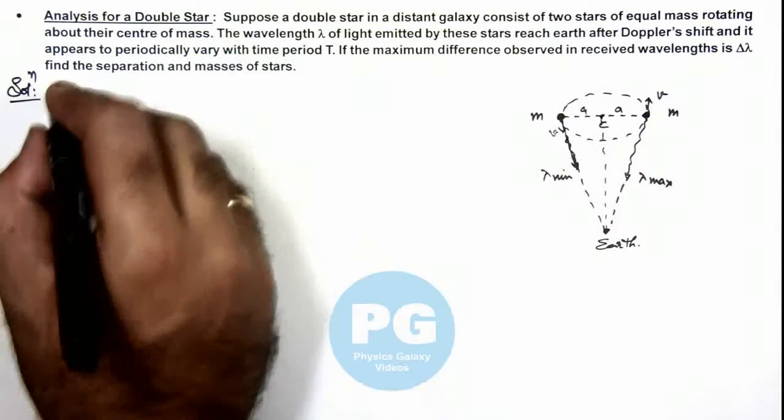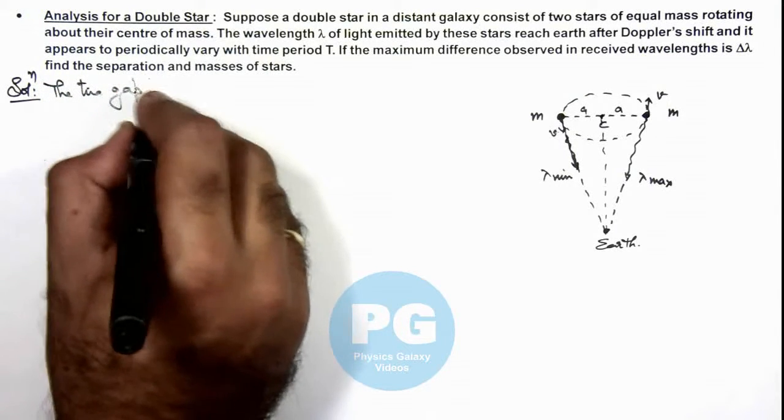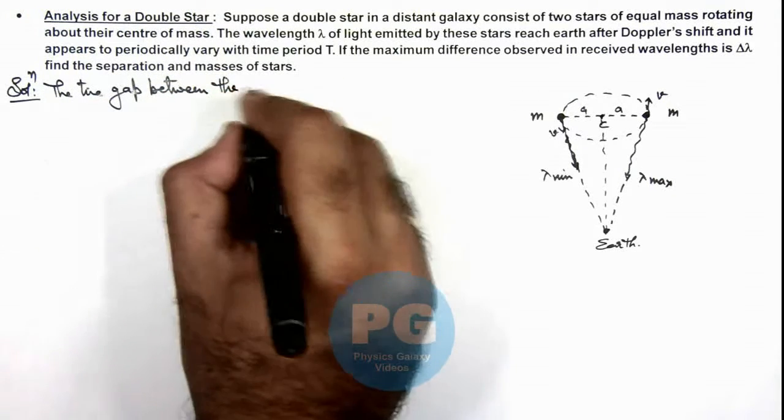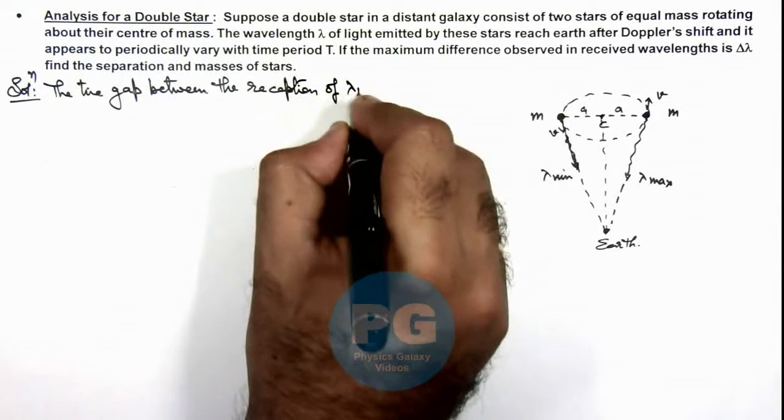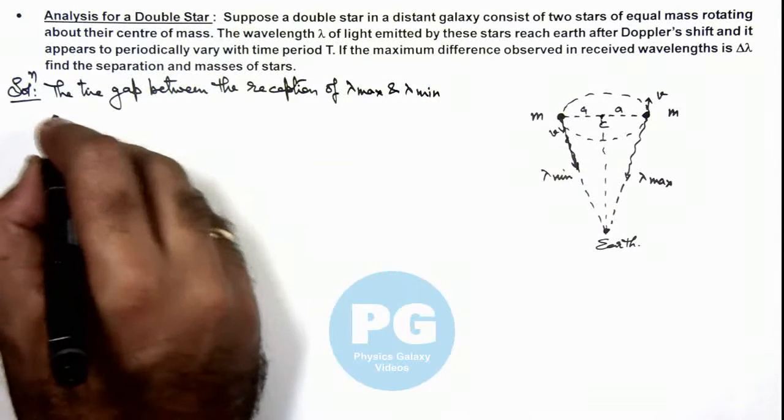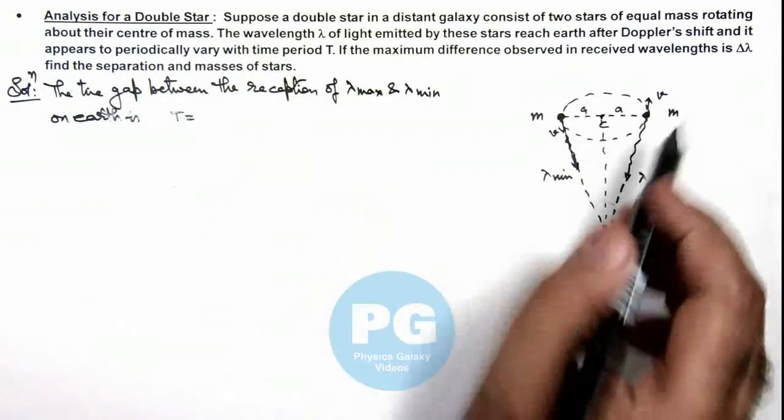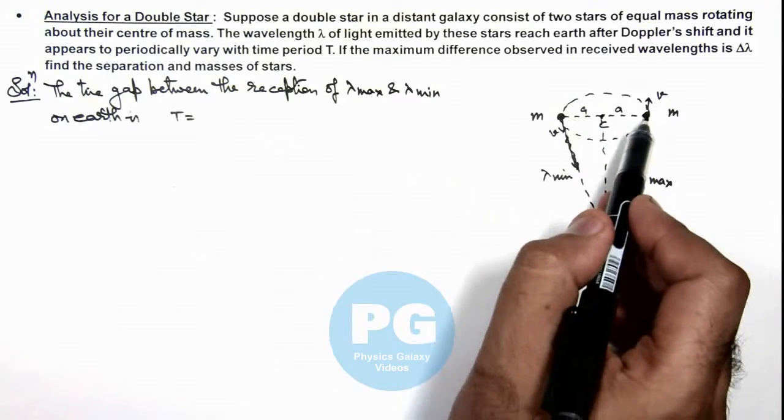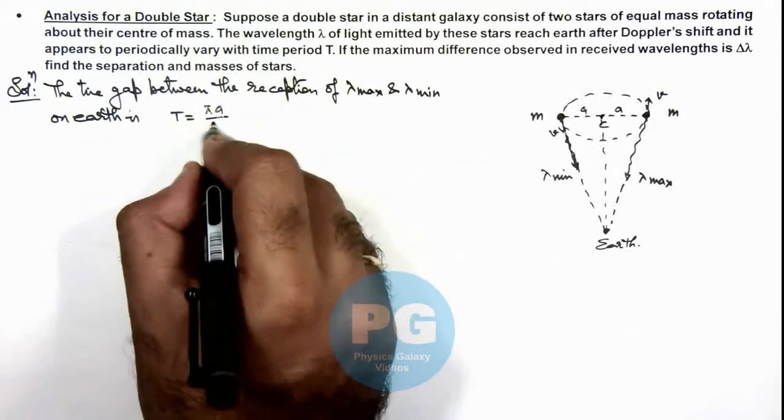Then we can directly write the time gap between the reception of λ_max and λ_min on earth. This time gap we can directly write as the distance travelled by 1 star from the position of maximum wavelength to minimum wavelength, which is πa divided by v.